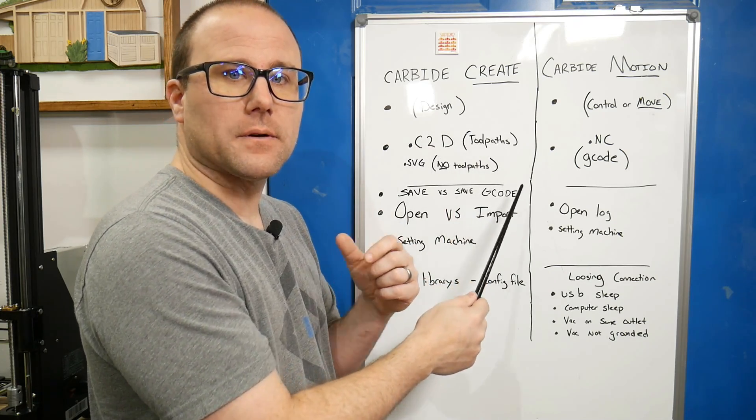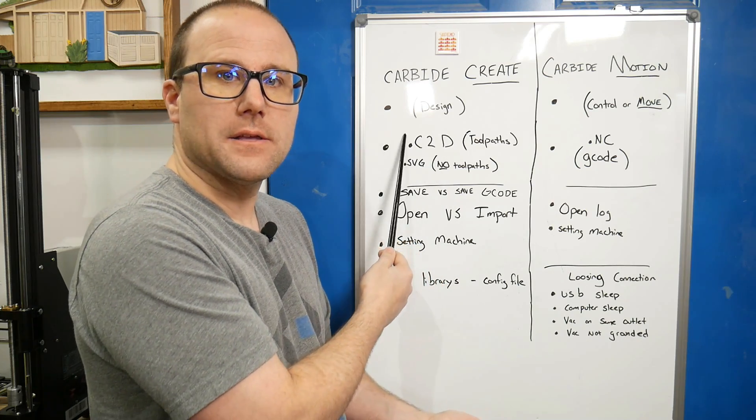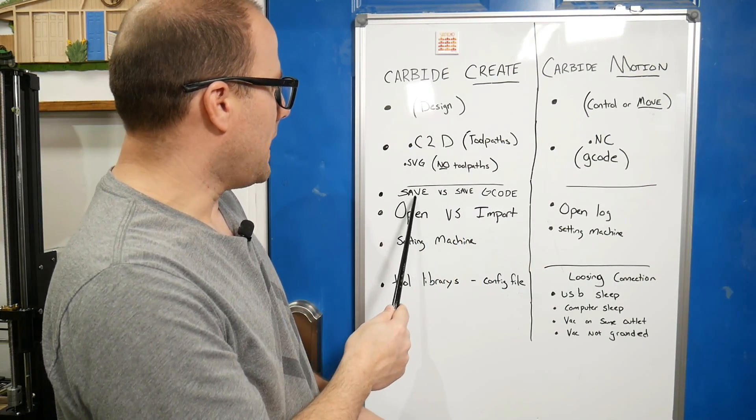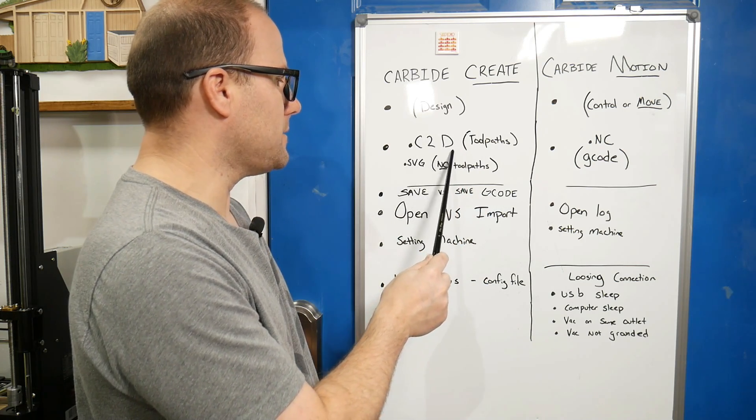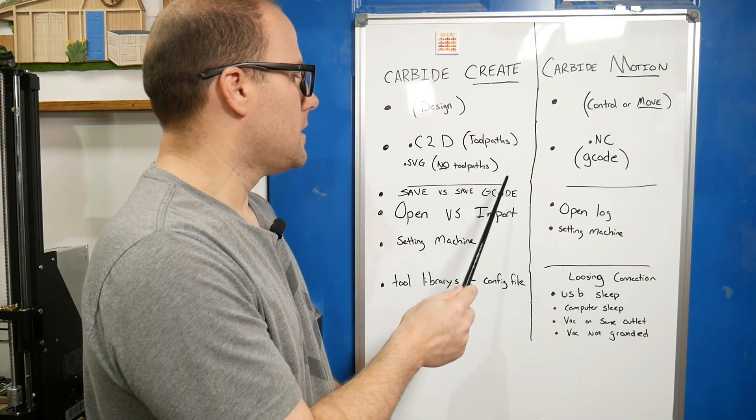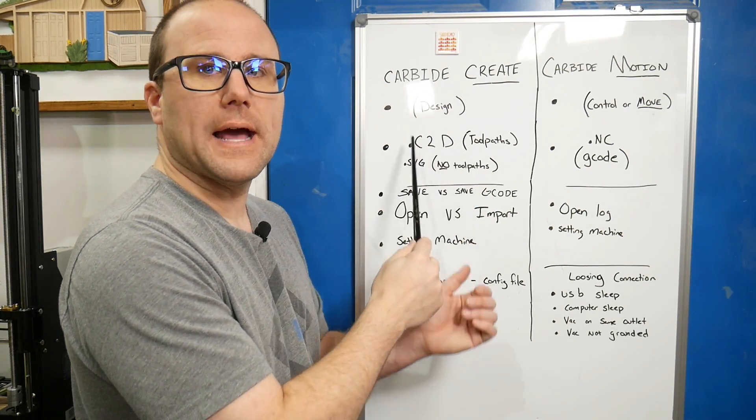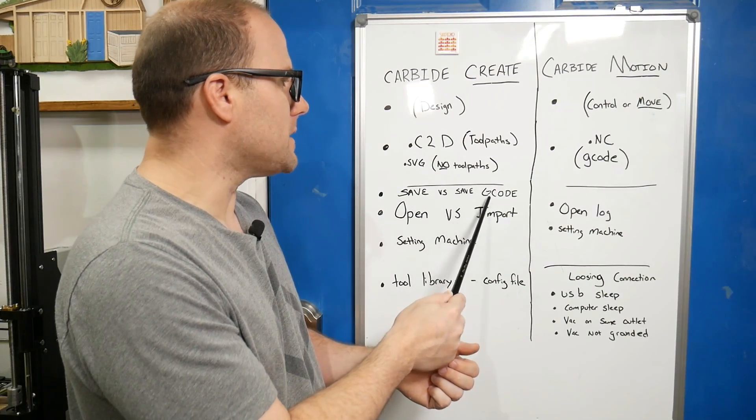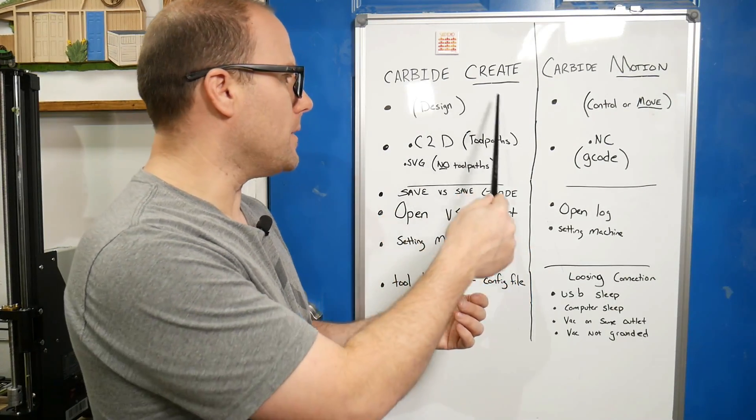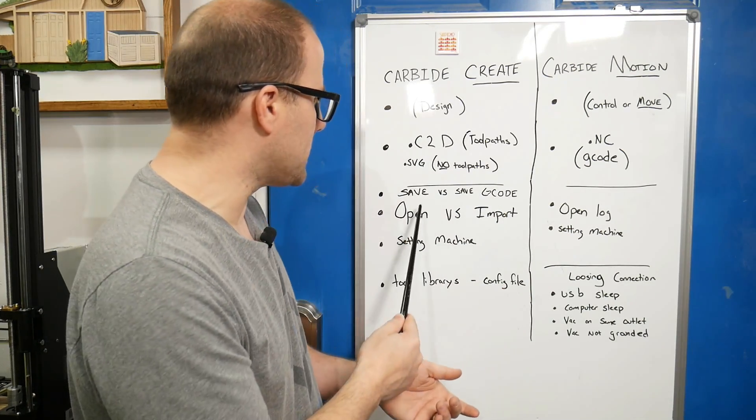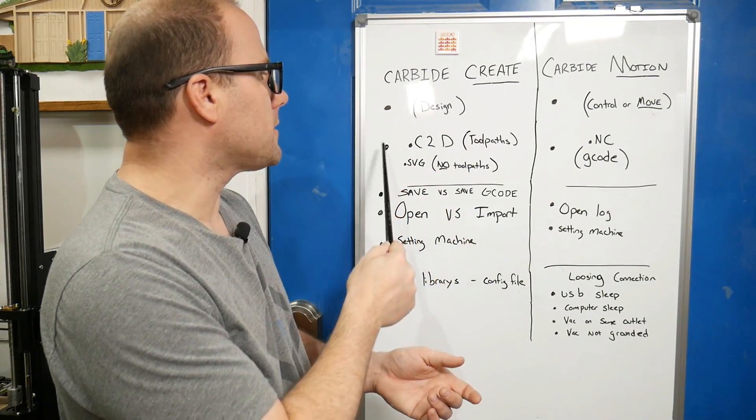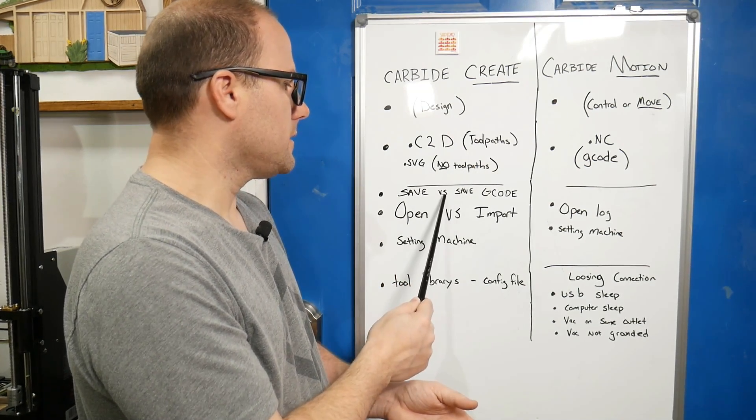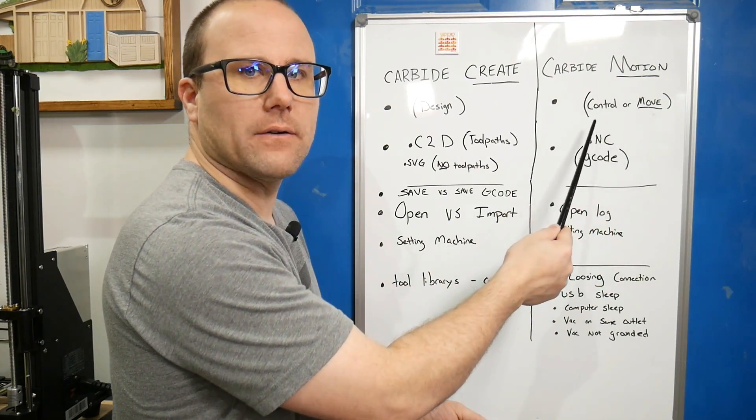I did that because you may want to edit this or if you have a different machine other than Shapeoko, you need to make it a different size. On Carbide Create, we have save the file - the create file, the .c2d - versus save the g-code. We want to save the file so we can edit that later. If we don't save the design file and only save the g-code, then close Carbide Create, we cannot go back and open this again and manipulate the file.